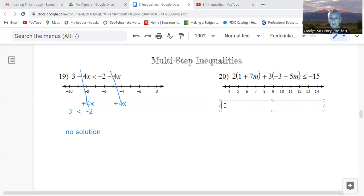So we do have parentheses. We'll distribute 2 times 1 is 2, 2 times 7m would be 14m. Now I'm going to distribute the next set of parentheses. So I got 3 times negative 3, which would be negative 9, and then positive 3 times negative 5m is negative 15m. And this is less than or equal to, and I don't have a great way to type that on Zoom, so I'm going to type it this way, negative 15.